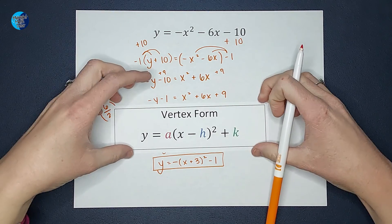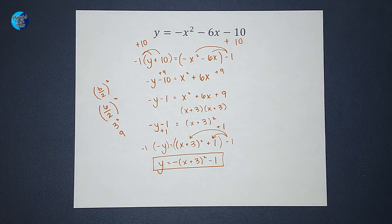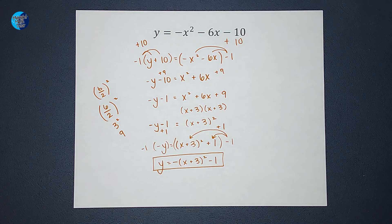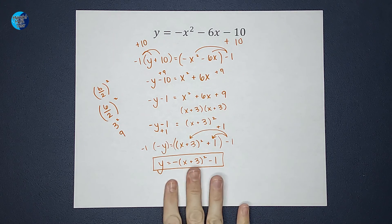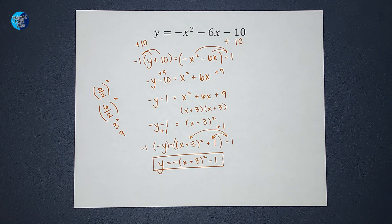All right, that is how you convert from standard form to vertex form if your x squared is negative. If you want to see how to graph this guy, I will link a video in the corner. Thanks!